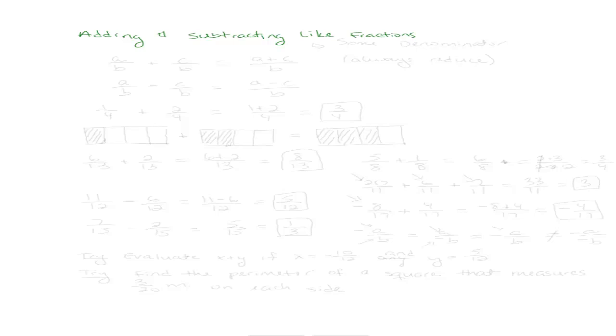And what I mean by like fractions is two fractions that have the same denominator. So basically we're going to live by one rule, and that rule is that if we have two fractions like A over B and another fraction, C over B, and they both have the same denominator, all we're going to do is we're going to add their numerators together and keep the same denominator.